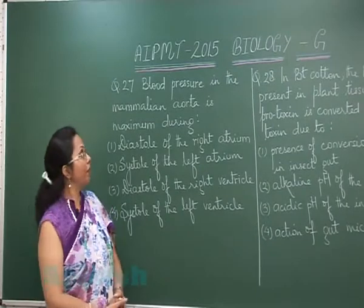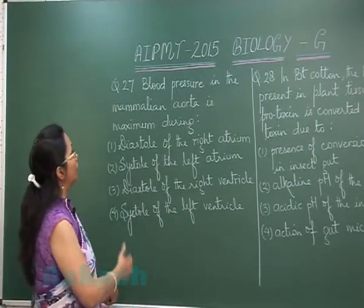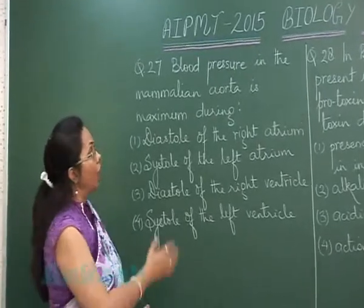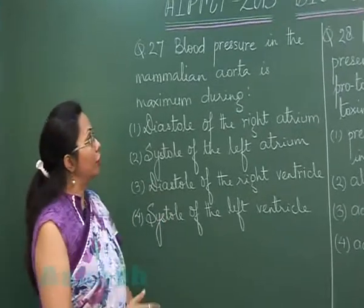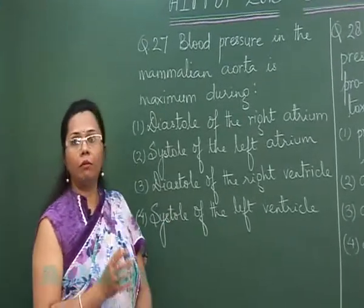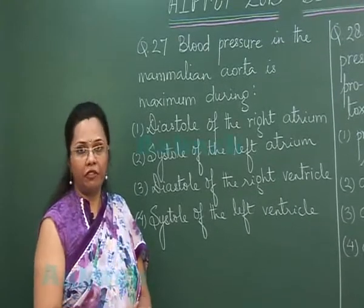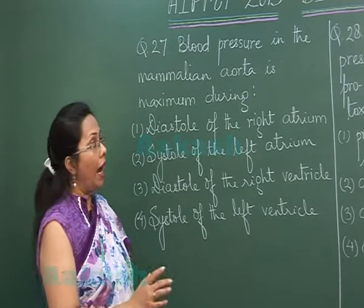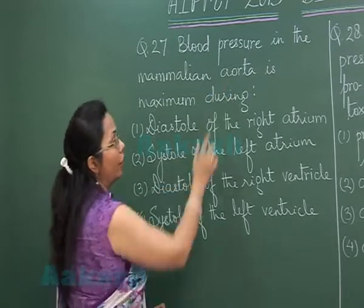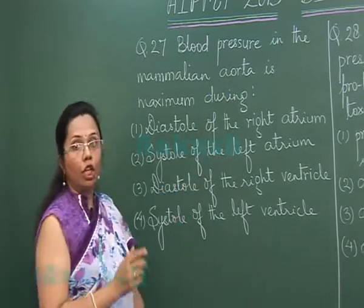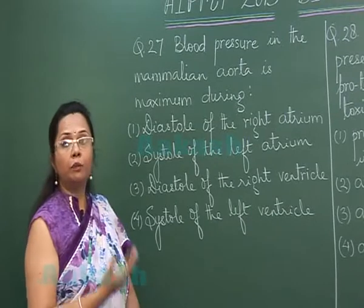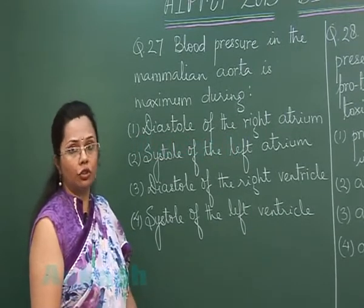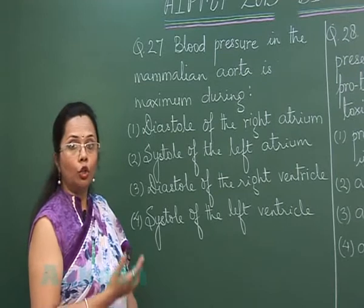Question 27: The blood pressure in the mammalian aorta is maximum during which phase? Blood pressure is maximum only during the systolic phase; the diastolic phase has reduced blood pressure. In the aorta, blood is pumped by the left ventricle when it goes into systole.